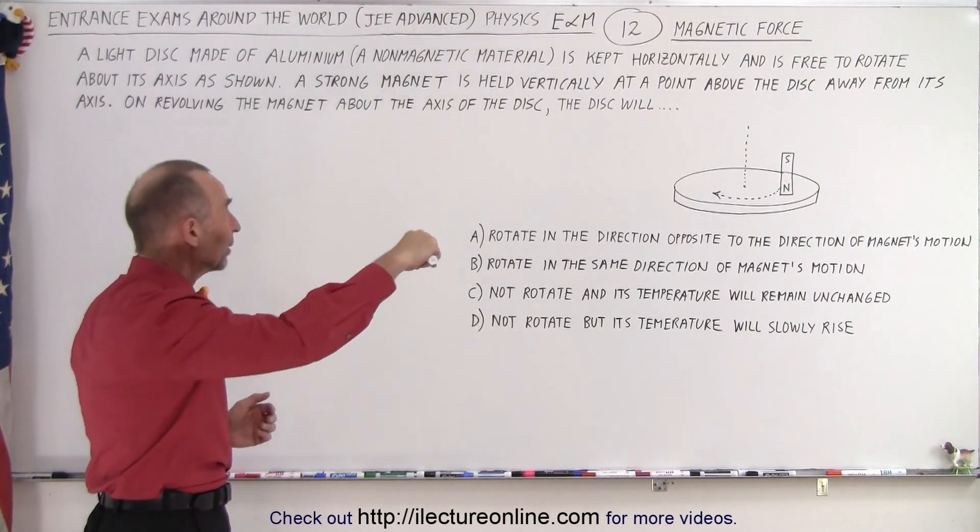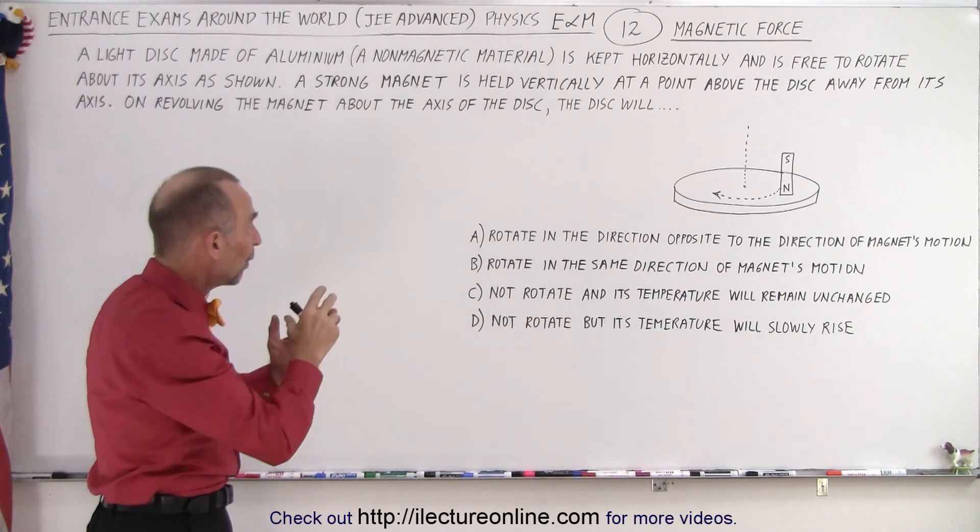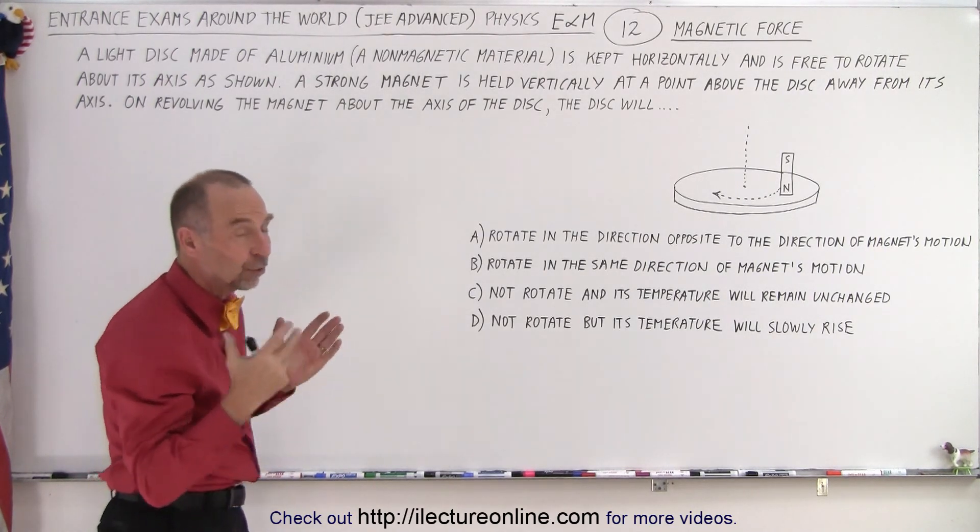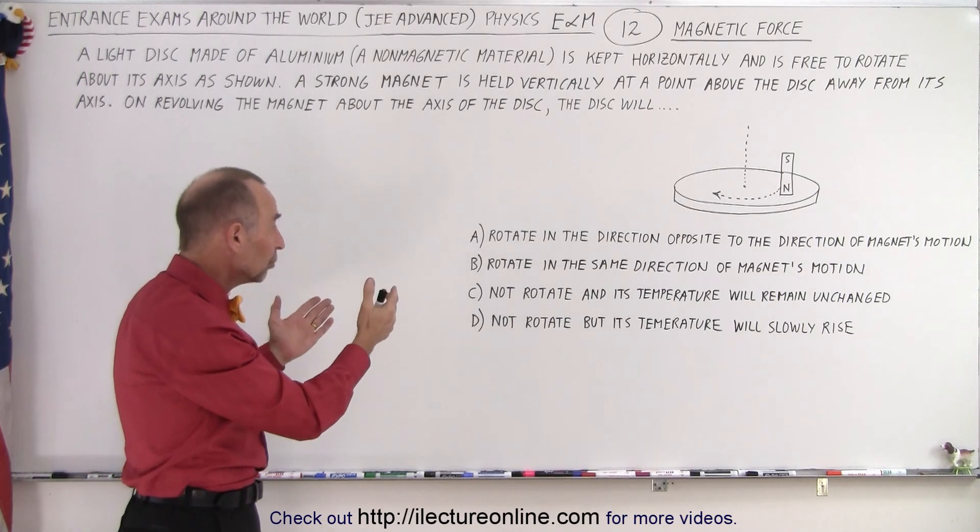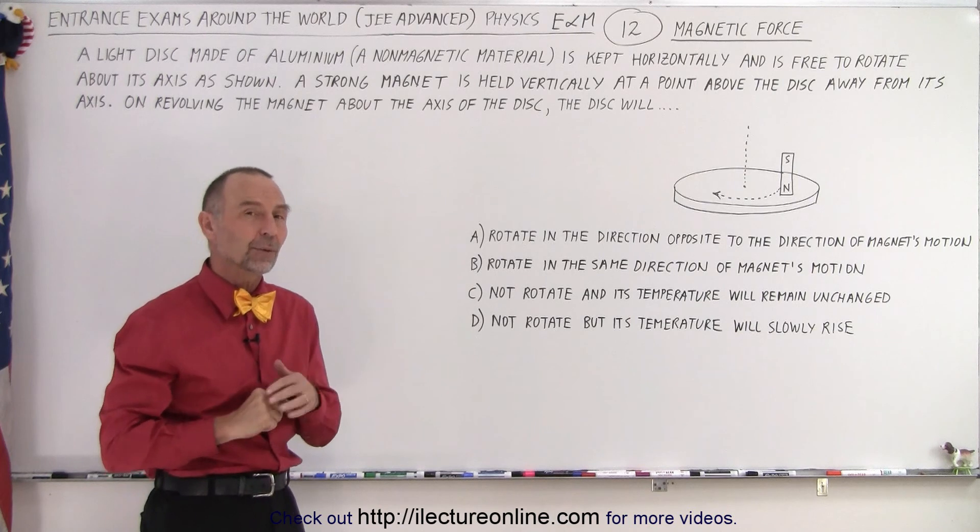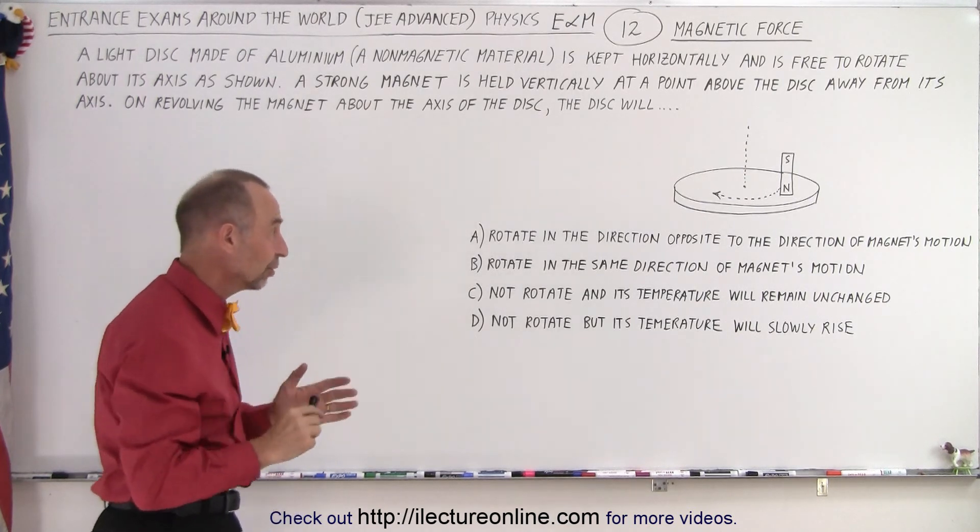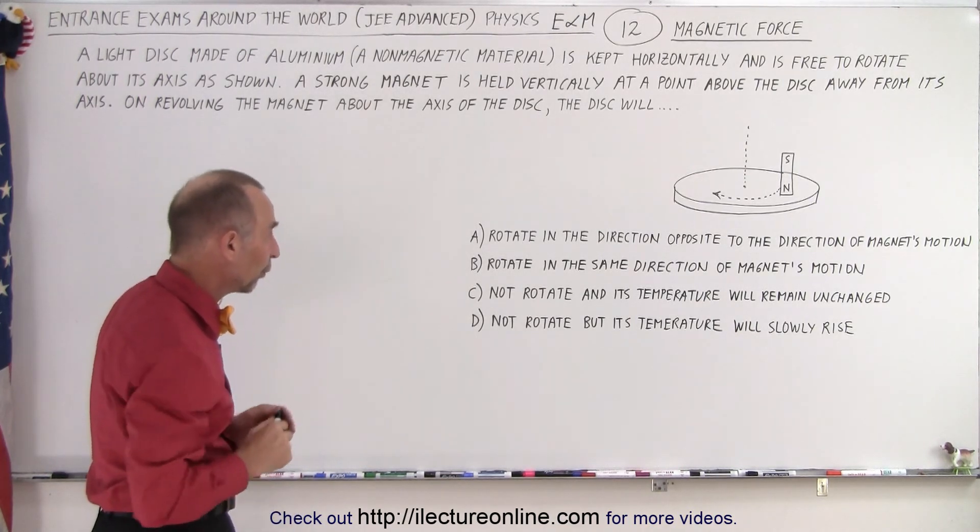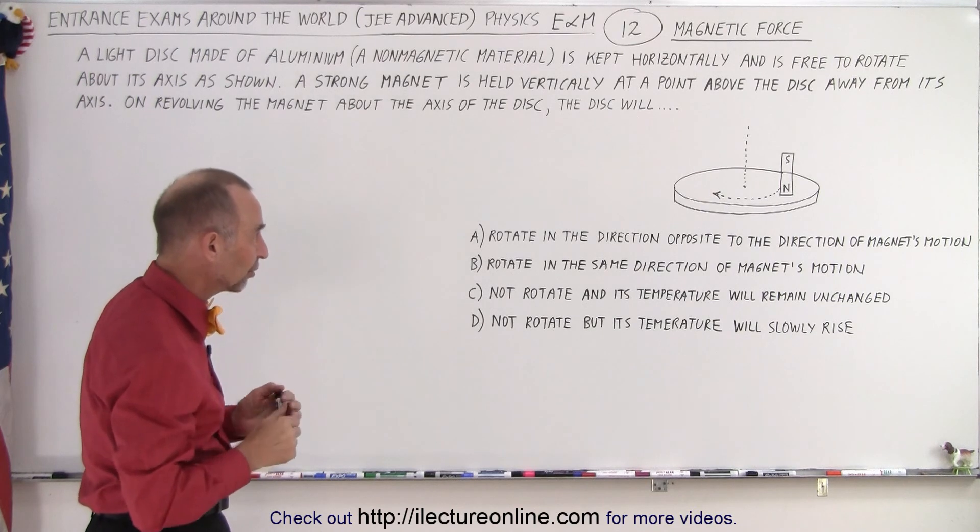And now they revolve the magnet about the disc, away from the axis, and the disc will do one or perhaps more of these things. But I believe this is in the section where only one of the four answers can be correct. So which of those four is correct?